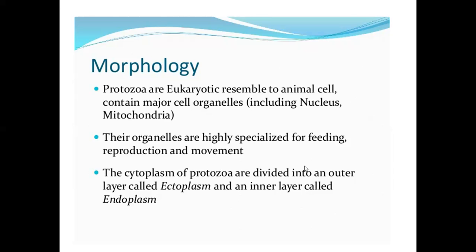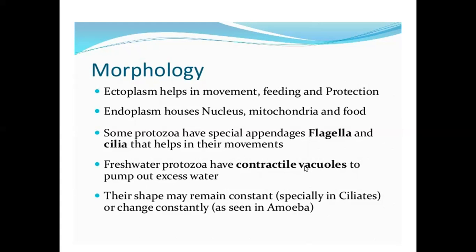Main morphology features of Protozoa. Protozoa are eukaryotic, resembling animal cells, and contain major cell organelles including nucleus and mitochondria. Their organelles are highly specialized for feeding, reproduction, and movement. The cytoplasm of protozoa is divided into an outer layer called ectoplasm and an inner layer called endoplasm. Ectoplasm helps in movement, feeding, and protection; endoplasm houses the nucleus, mitochondria, and food.